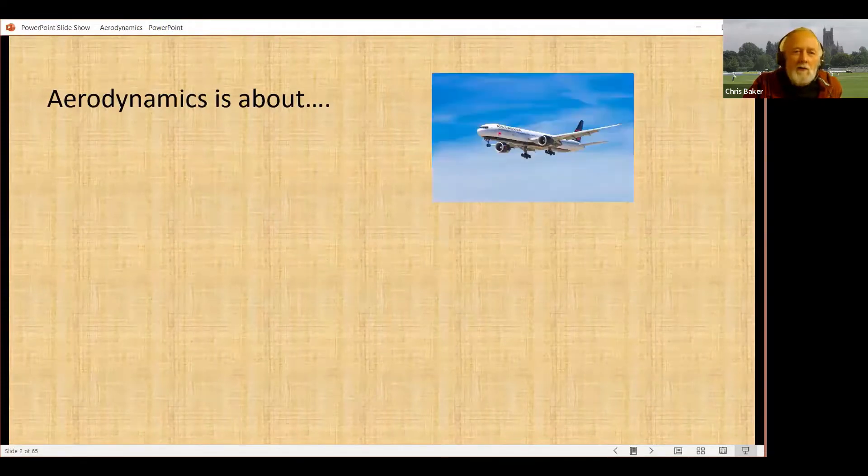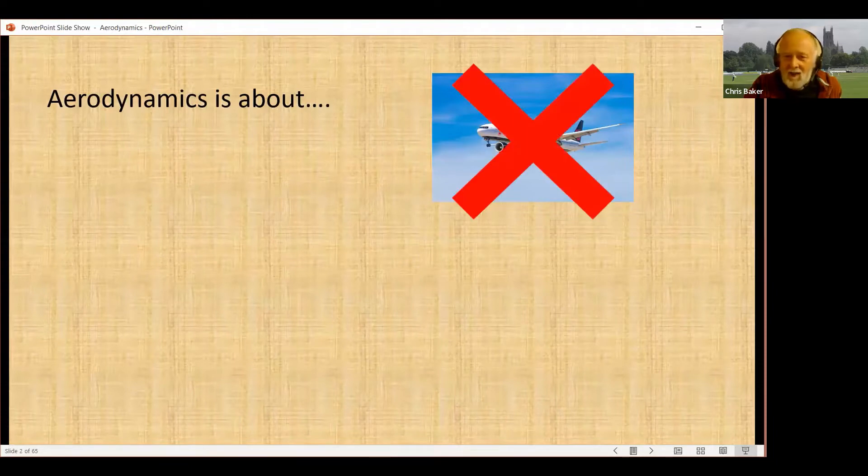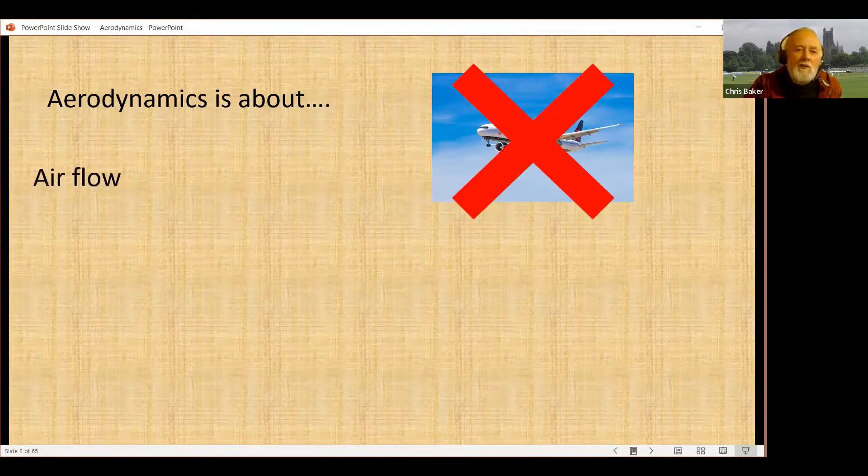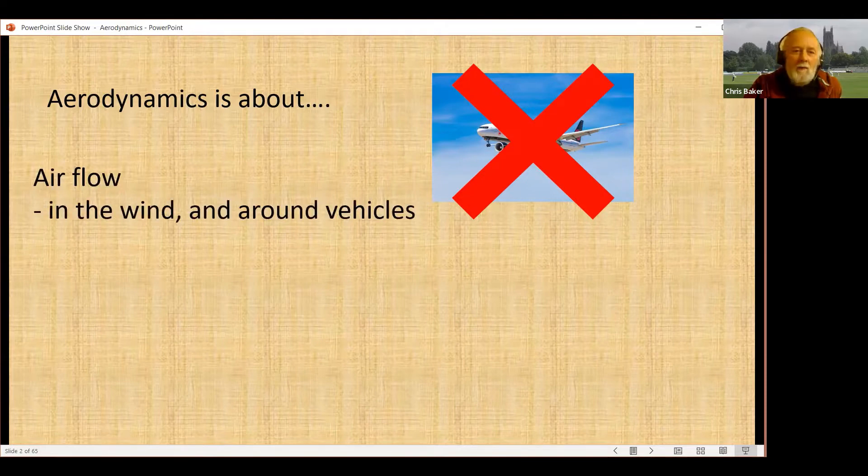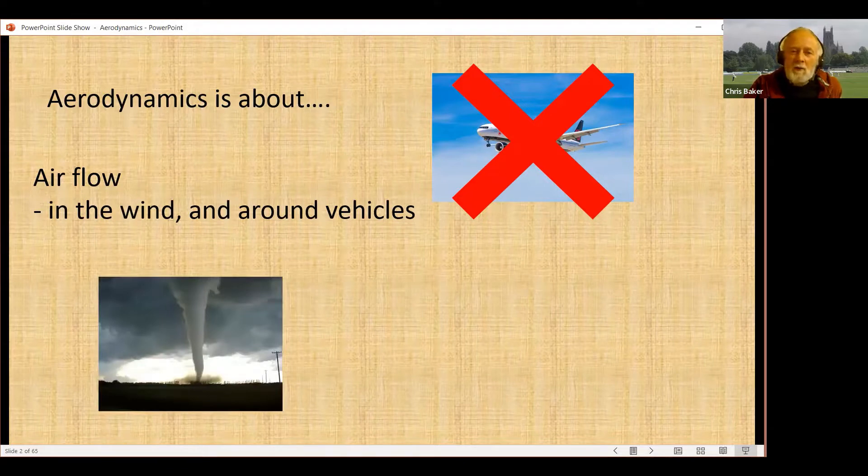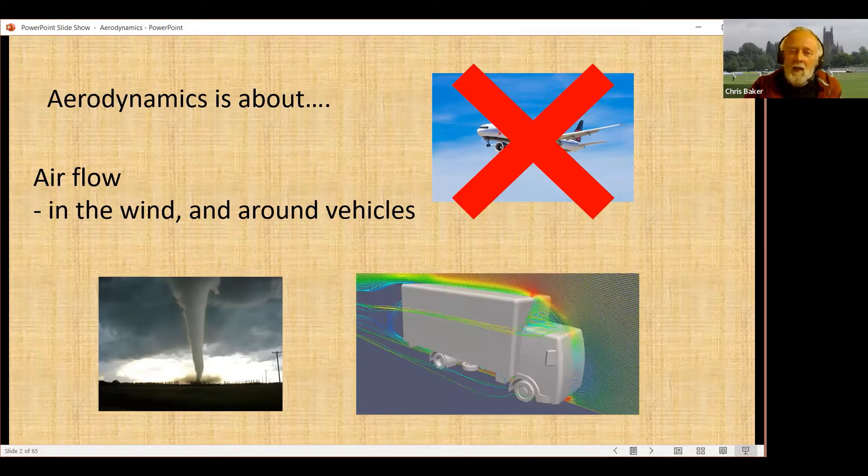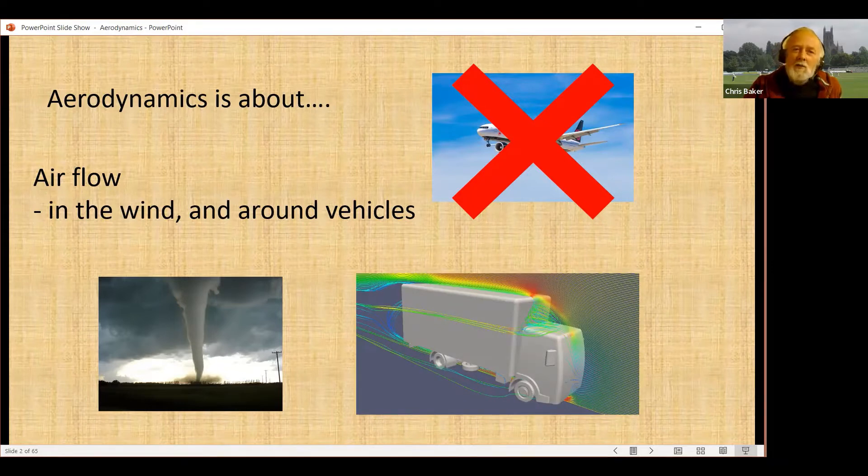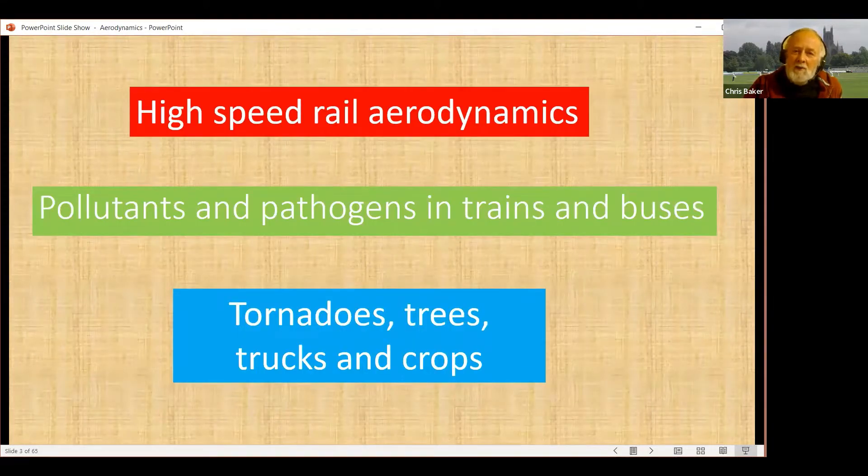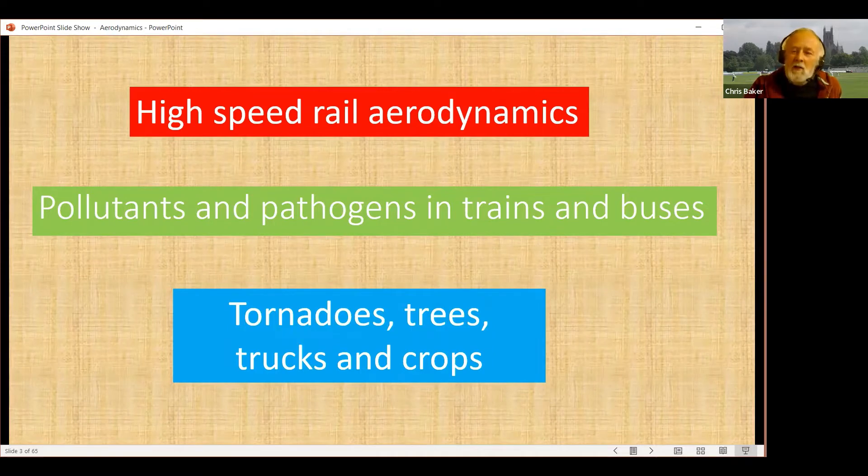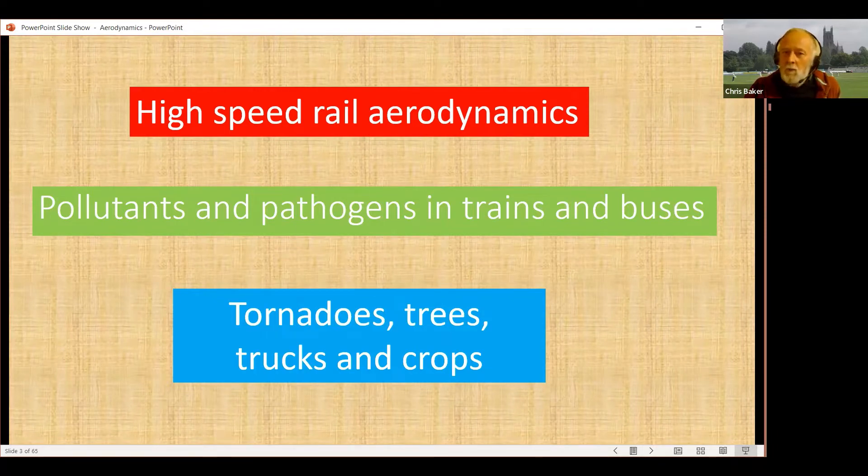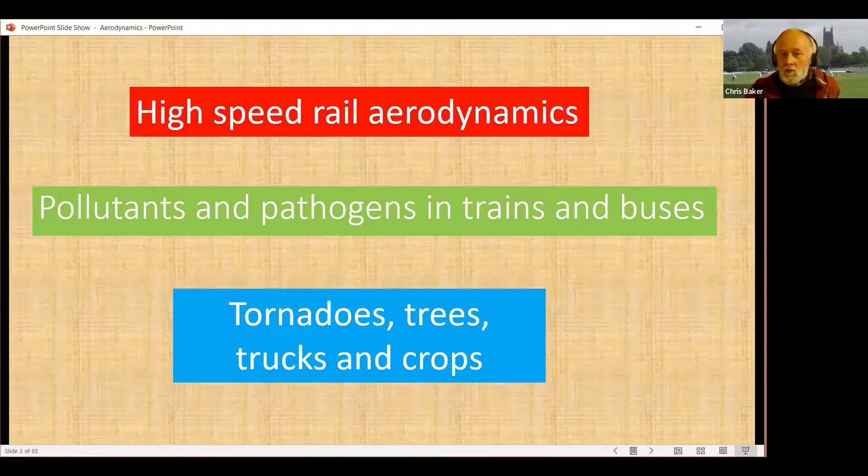If I asked you what aerodynamics were about, you'd say it were about aircraft. Well, it isn't in my case actually. The aerodynamics I'm more concerned about is the airflow in the wind and the airflow around vehicles in particular. What I'd like to do in this talk is to talk about three particular areas that I'm working on at the minute: looking at high-speed trains, looking at pollutants and pathogens in public transport vehicles—and I'll let you guess what pathogen in particular that might be—and looking also at tornadoes, trees, trucks, and crops. The latter is very much in association with folk in the US and Canada.